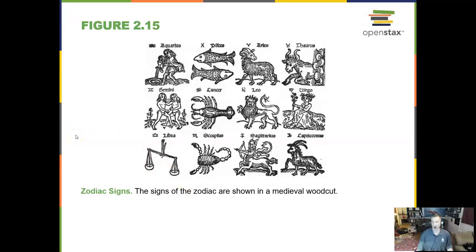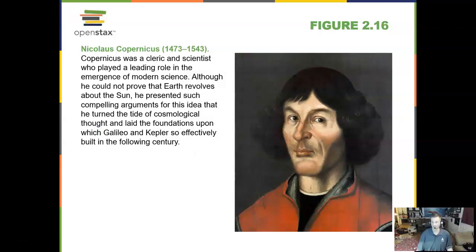These are your zodiac signs. There are really 13 constellations on the zodiac but we recognize 12, one for each month. Now this gentleman is very important. Nicholas Copernicus from 1473 to 1543. Copernicus was a scientist and a cleric who played a leading role in modern science coming out of Europe. He did not prove that the Earth revolved around the Sun. But he presented compelling arguments for this idea. And it was the foundation for what later scientists, Galileo and Johann Kepler, came up with.